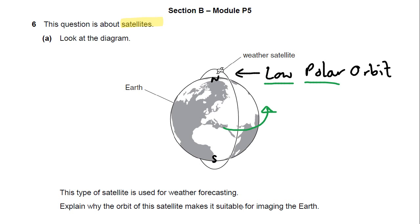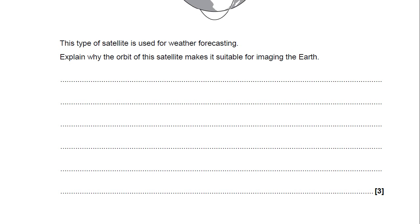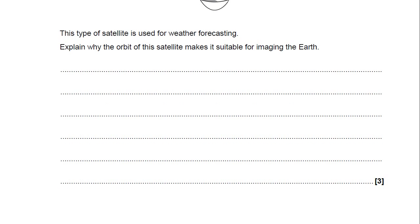This satellite is used for weather forecasting. Explain why the orbit of this satellite makes it suitable for imaging the Earth. Think about the two things I've just said. It's a three mark question. Pause the video here and have a go.